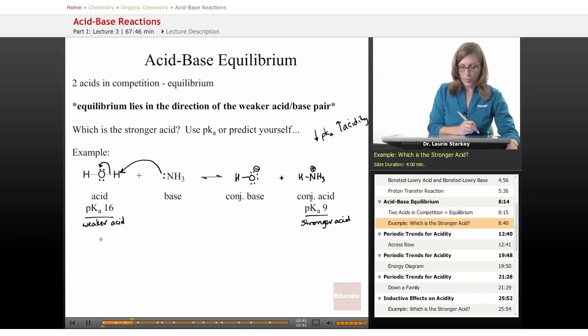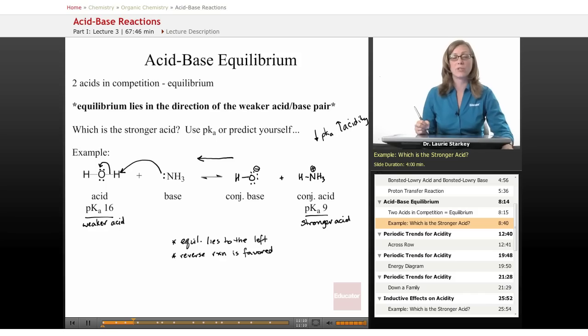So where does the equilibrium lie? It lies in the direction of the weaker acid-base pair. So it's going to be going from the stronger acid to the weaker acid. The equilibrium lies to the left, is one way to describe that. You could also say that the reverse reaction is favored. And we can make that conclusion simply by comparing the two acids.